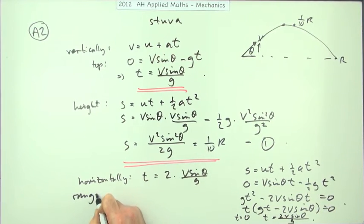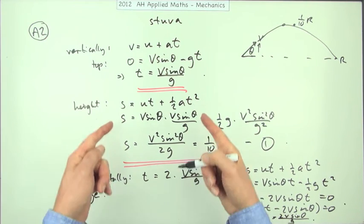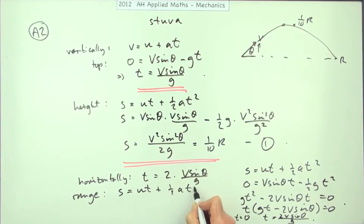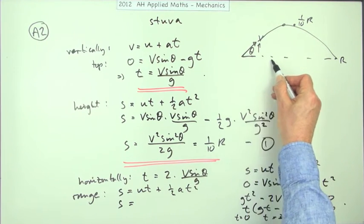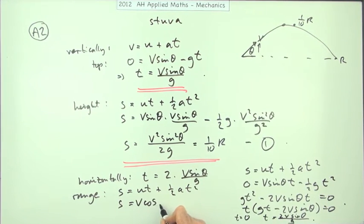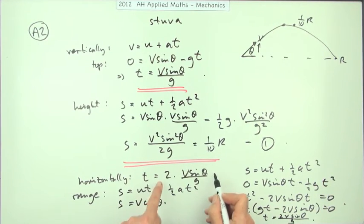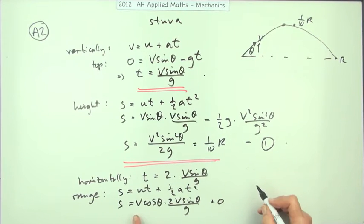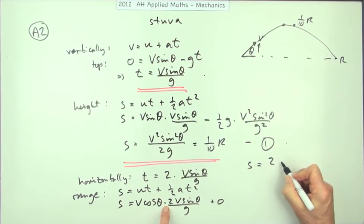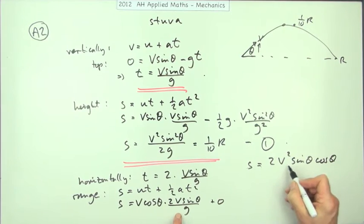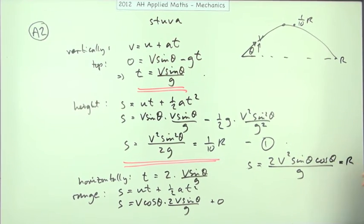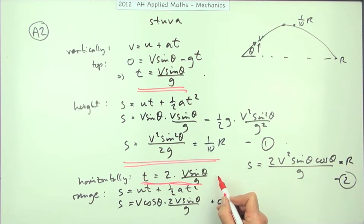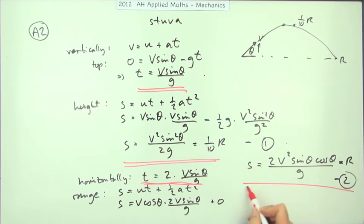Now find the range. Using s = ut + ½at² with no horizontal acceleration, the horizontal speed is v cosθ, and the time of flight is 2v sinθ / g. So the range R = v cosθ × 2v sinθ / g = 2v² sinθ cosθ / g. That's the second equation needed.